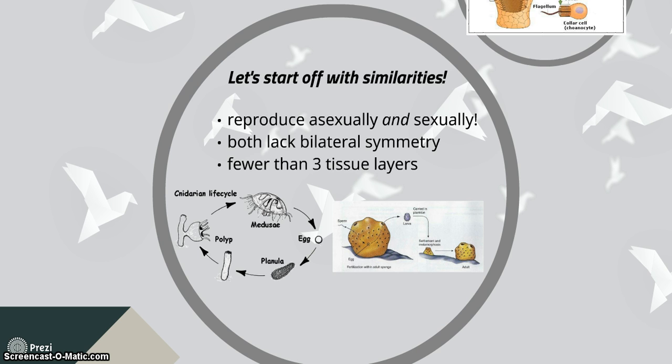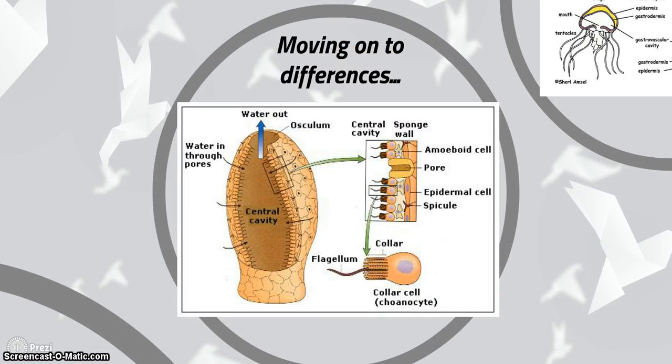Now let's move on to differences. Look at this example here. Being in the phylum Porifera, sponges are complex aggregations of specialized cells, and these cells don't form true tissues and organs.